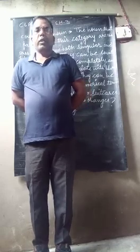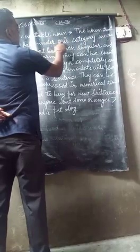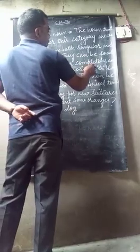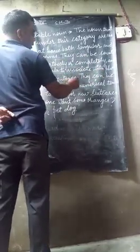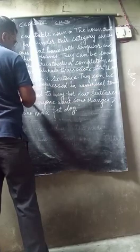First, I am going to explain countable nouns. Let's see on the board. Countable noun: the nouns that fall under this category are the ones that have both singular and plural forms. They can be counted either relatively or completely, and form plural associated with plural verbs in a sentence. They can also be expressed in numerical terms.